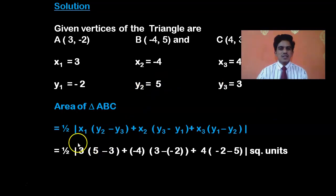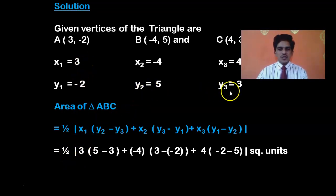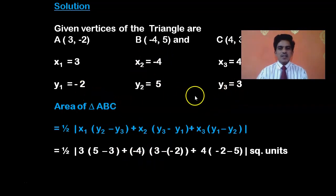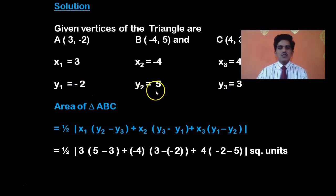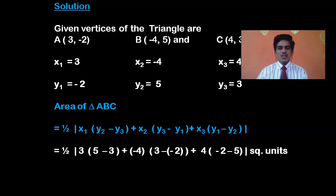So let us write the values. 1/2 modulus: x1 is 3, times (y2 - y3) which is (5 - 3); plus x2 which is -4, times (y3 - y1) which is (3 - (-2)); plus x3 which is 4, times (y1 - y2) which is (-2 - 5). This substitution is the most crucial part. If you can do this correctly, the remaining thing is just simple arithmetic — multiplication and addition.